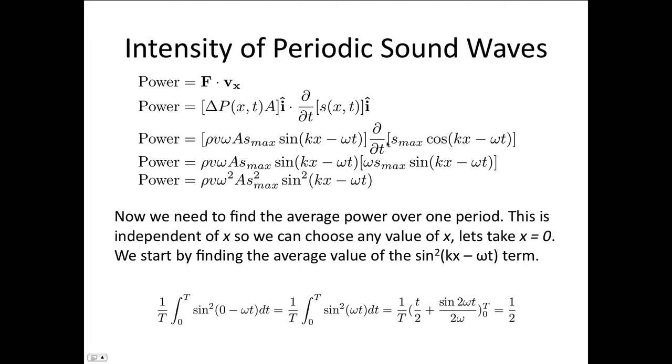Now all we need to do is take the derivative of this. When we do that, we get omega s max sine(kx minus omega t). And so then multiplying these two together, we end up with rho v omega squared A s max squared sine squared(kx minus omega t). So this gives us the power which is transferred at any point in space and time.